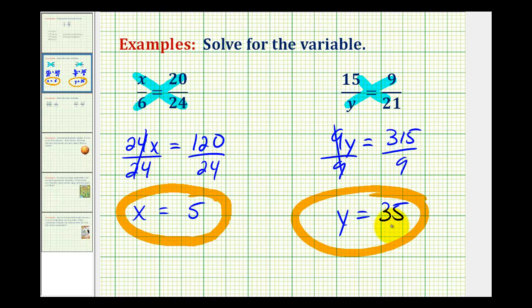So the nice thing about these is that we can always double check our work by substituting in 35 for y, and make sure that 35 times 9 is equal to 15 times 21.